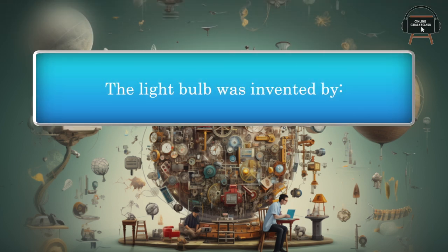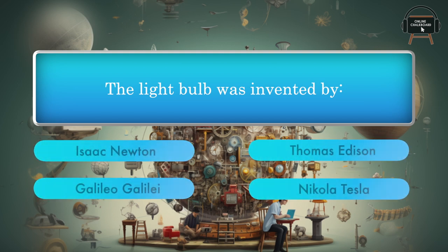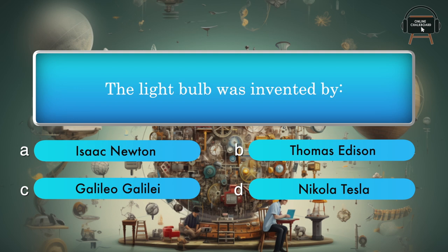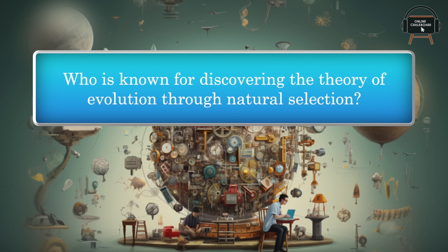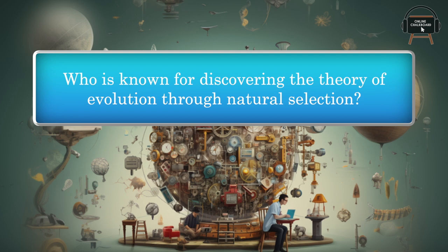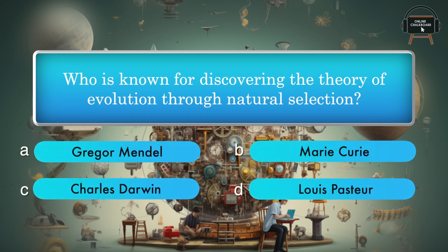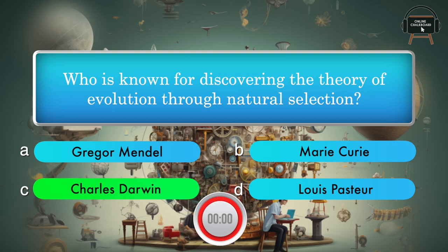The light bulb was invented by: Isaac Newton, Thomas Edison, Galileo Galilei, Nikola Tesla. Answer: Thomas Edison. Who is known for discovering the theory of evolution through natural selection? Gregor Mendel, Marie Curie, Charles Darwin, Louis Pasteur. Answer: Charles Darwin.